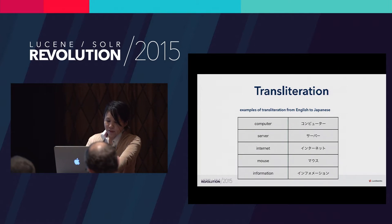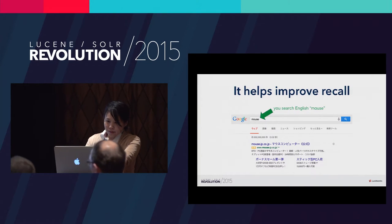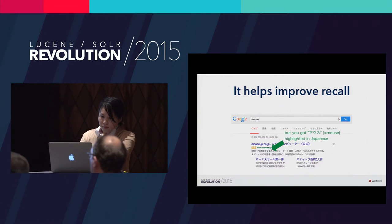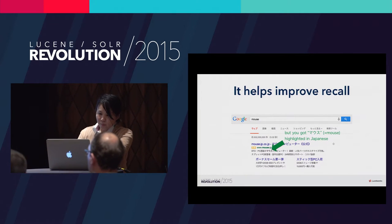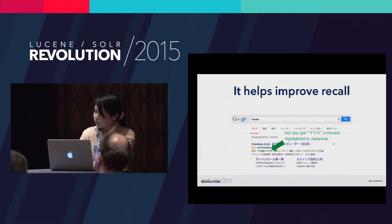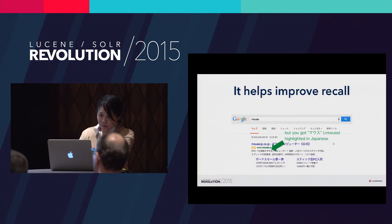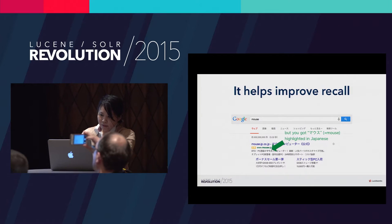Let's see a specific example. Here, the user searched the English word 'mouse', but the system returned results with mouse written in Japanese katakana highlighted in the search results — shown in bold. What we've learned is that if we have a list of English-katakana word pairs originating from English words, it helps improve recall for a search engine. That's nice for a multi-language search engine.